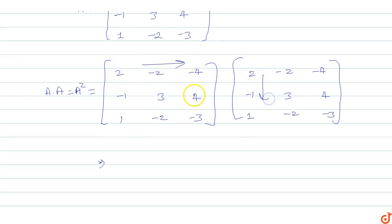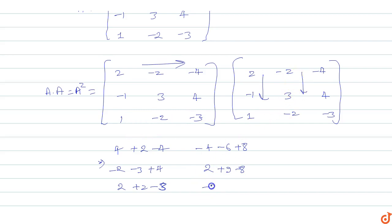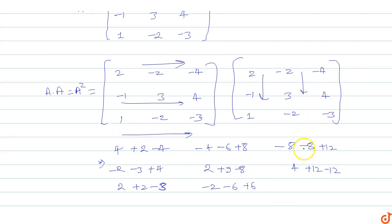Multiply this row with this column: 2 into 2 is 4, minus 2 into minus 1 is plus 2, minus 4 into 1 is minus 4. Next element: 2 minus 3, minus 2 minus 3 plus 4. Next: 2 plus 2 minus 3. Next: minus 4 minus 6 plus 8. Next: 2 plus 9 minus 8. Next: minus 2 minus 6 plus 6. Next: minus 8 minus 8 plus 12. Next: 4 plus 12 minus 12. Last: 4 minus 4 minus 8 plus 9.